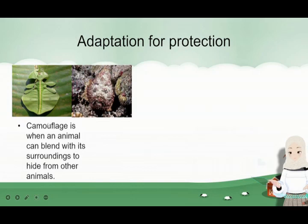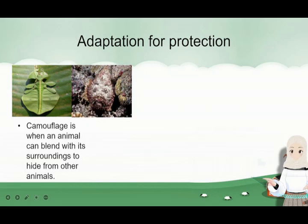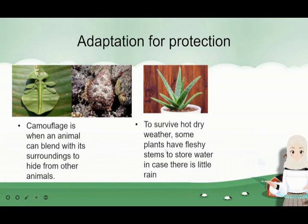Next, camouflage. Some animals can camouflage. Camouflage is when an animal can blend with its surroundings to hide from other animals. For example, the leaf insect looks like a leaf, so it can hide among leaves so that birds can't see that it's actually an insect — it just looks like a leaf from really, really high. There's also the rock fish, which pretends it is a rock so that it can hide from predators.